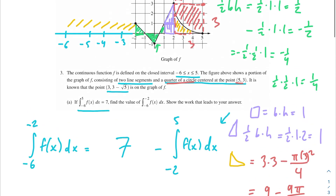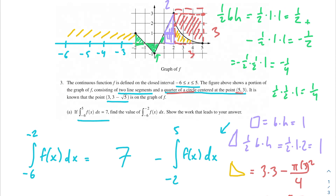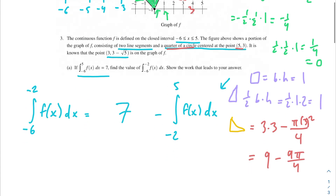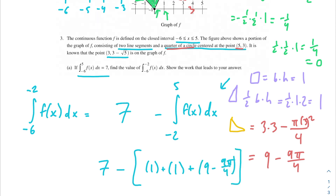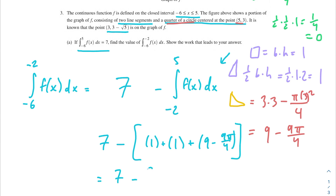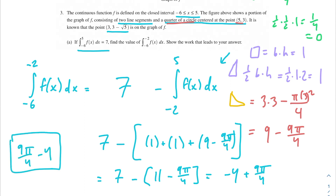Adding everything up for the area from negative 2 to 5: the triangles from negative 2 to 1 all cancel to 0. Then we add 1 (square) plus 1 (triangle) plus 9 minus 9π/4 (the quarter-circle region). So we get 7 minus (1 + 1 + 9 − 9π/4), which gives 7 minus 11 plus 9π/4, simplifying to 9π/4 minus 4. That's our final answer for Part A.